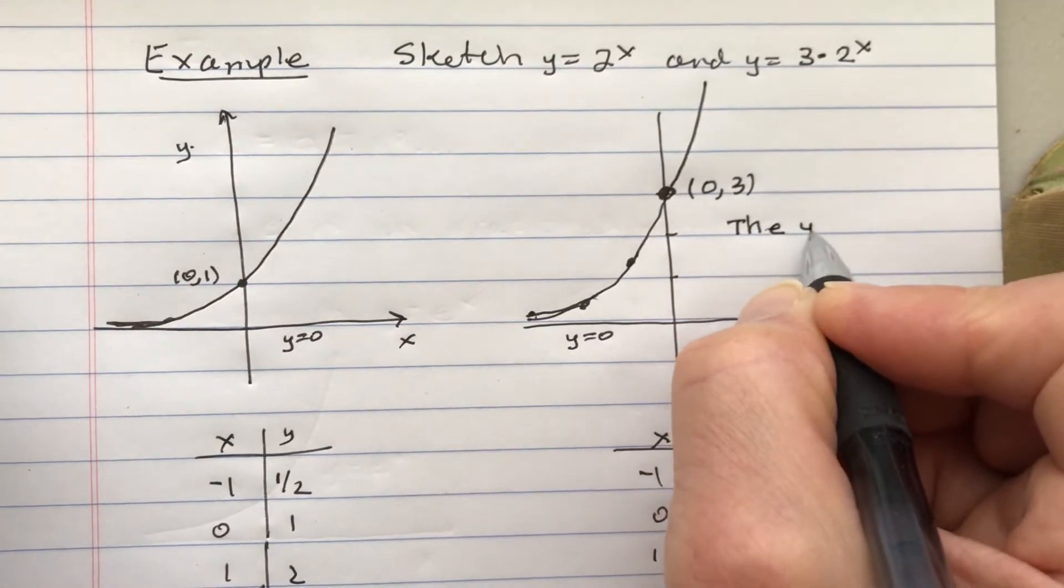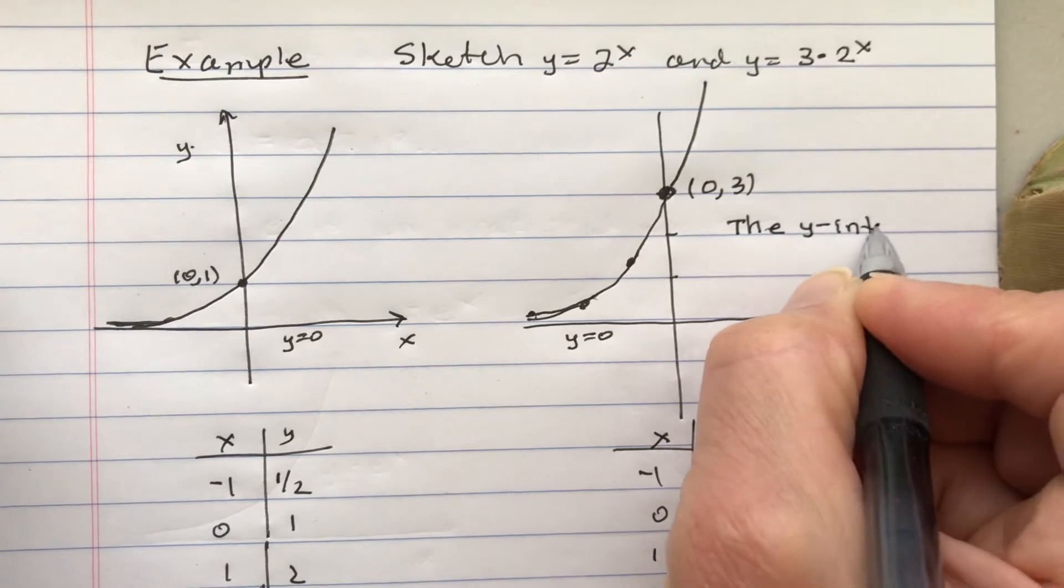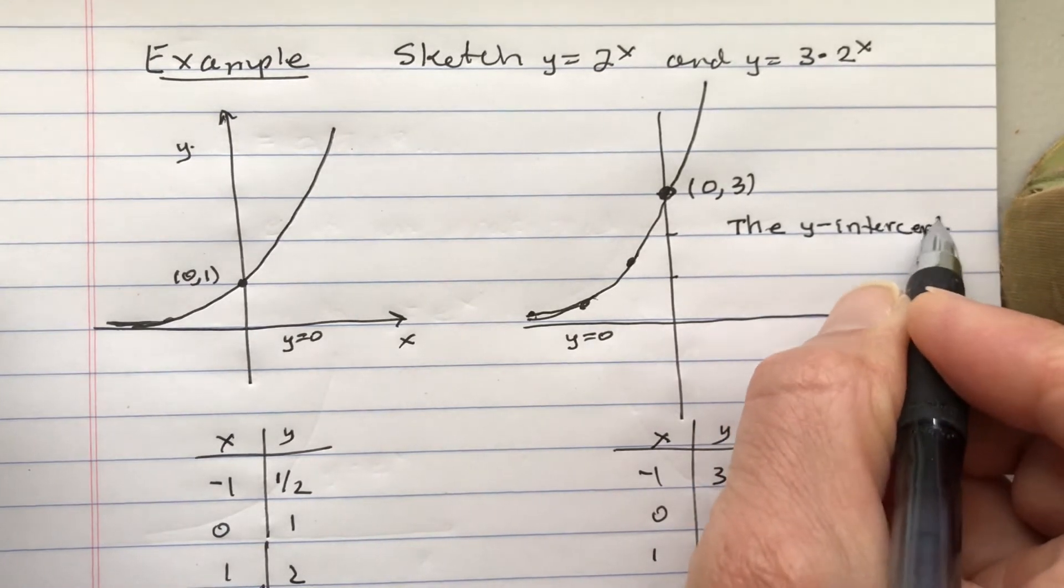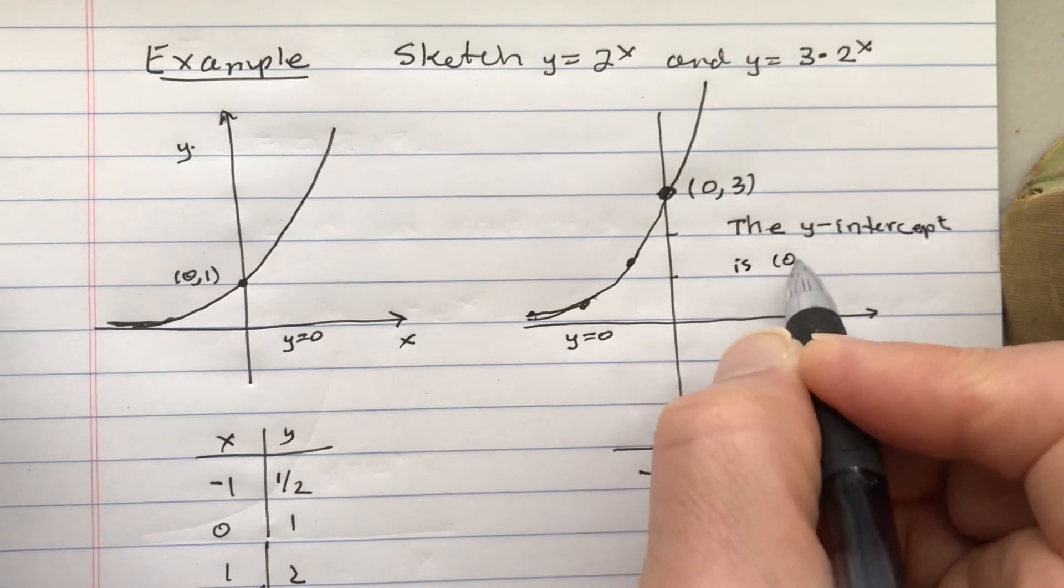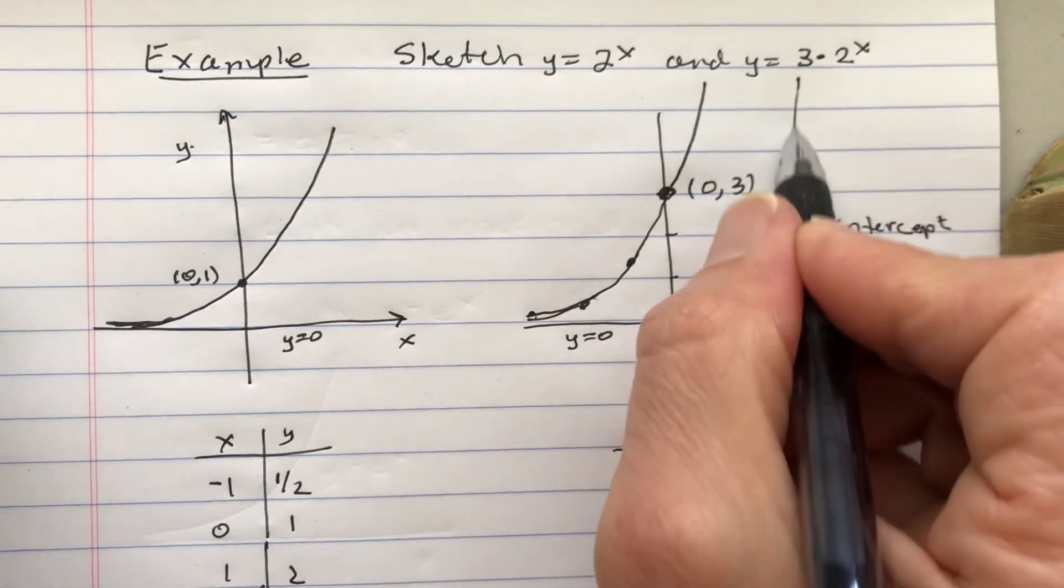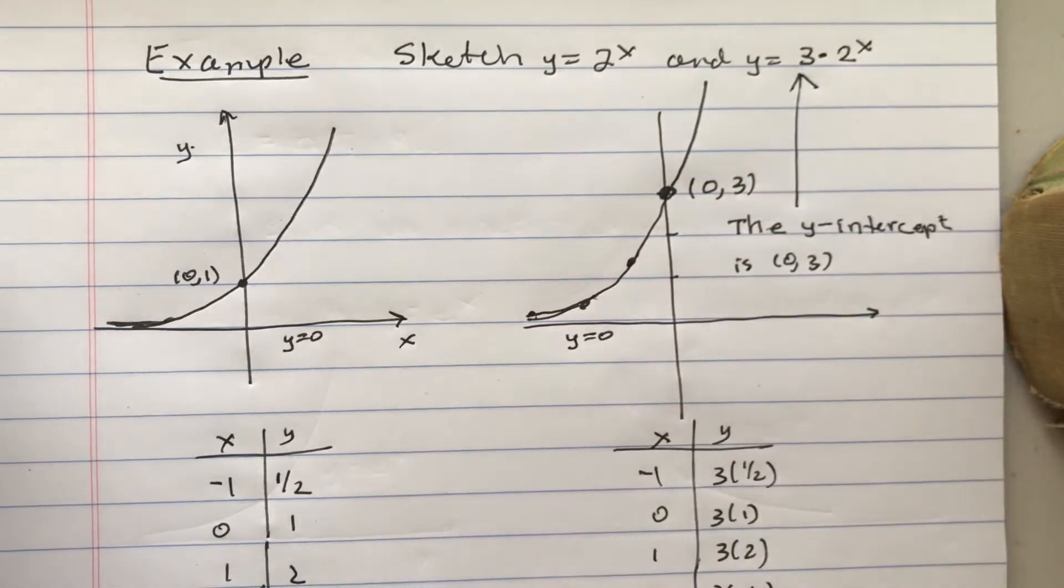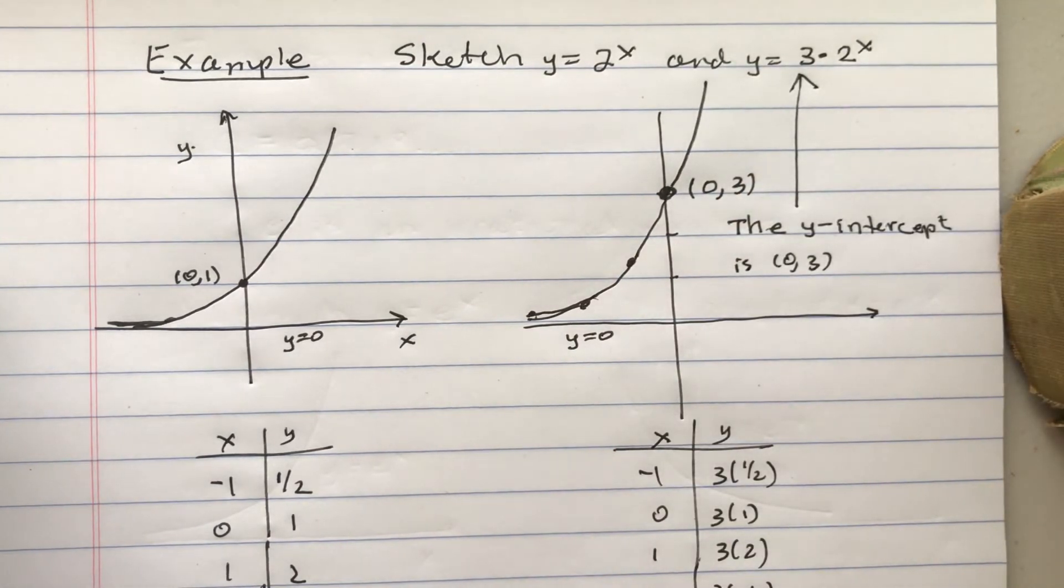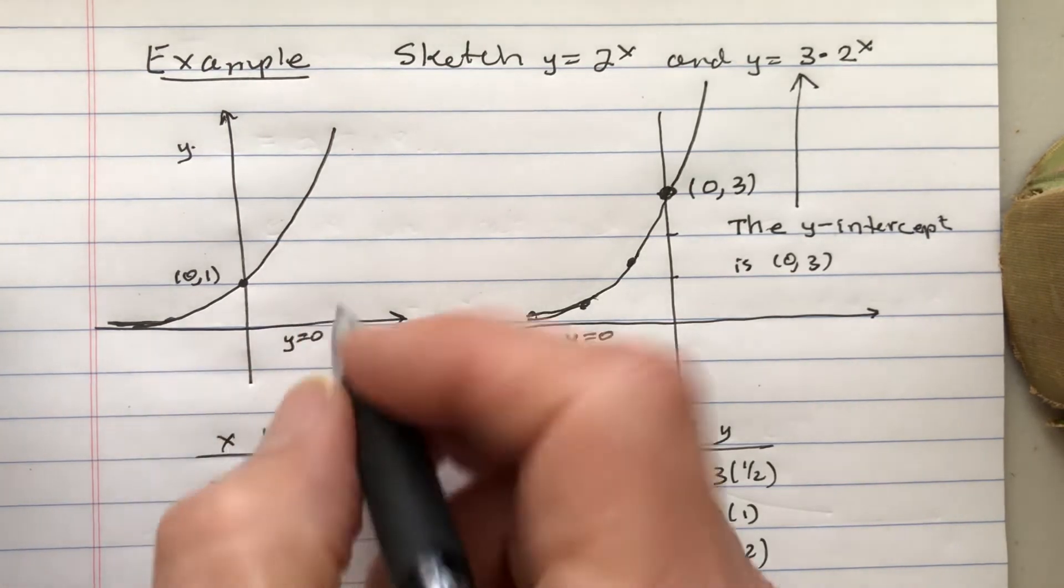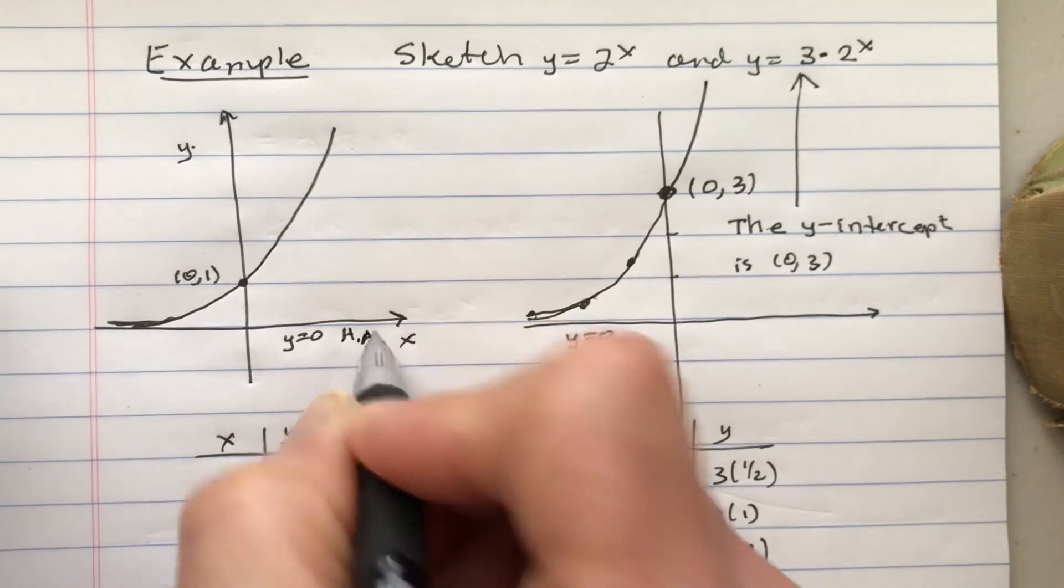The y-intercept is 0, 3. I don't feel like I need to write that down because it says that right here. But it's just so important. That's what multiplying by 3 does. It changes the y-intercept.